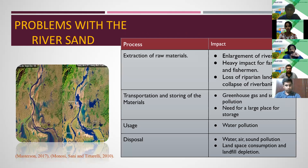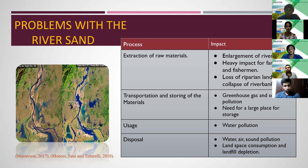There are several impacts at each stage. In the first stage of river sand extraction: enlargement of river mouth, heavy impact on farmers and fishermen, loss of riparian land, and collapse of river banks. In the second stage of transporting and sorting: greenhouse gas emissions and sound pollution. In the third stage: water pollution due to the usage of river sand in concrete. In the last stage of disposal: water, sound, and air pollution, as well as land and space consumption.